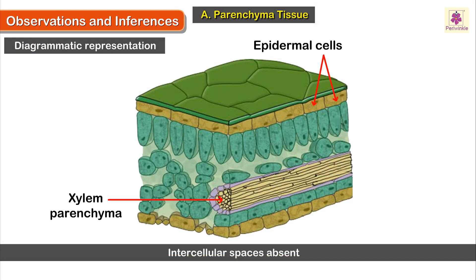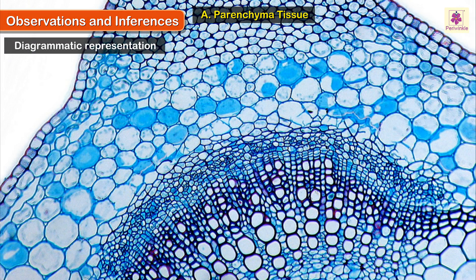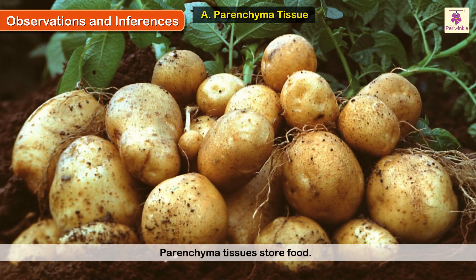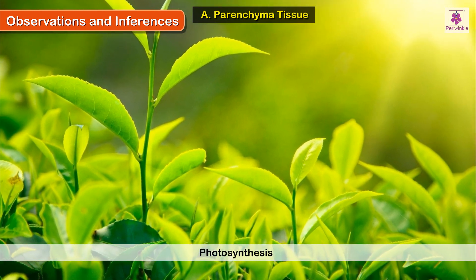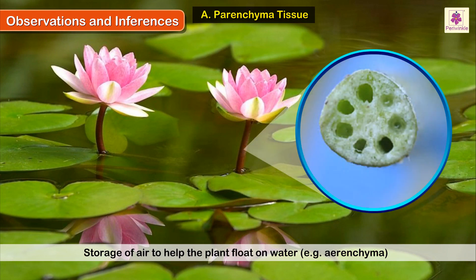Parenchyma is usually found in the epidermis, cortex, xylem, and phloem. The main function of the tissue is storage of food substances. Some cells may also perform other functions such as photosynthesis, protection by cells with cuticles (e.g. epidermal cells), and storage of air to help the plant float on water (e.g. aerenchyma).